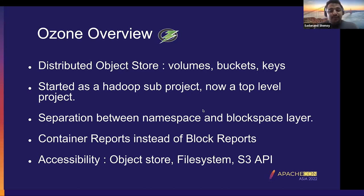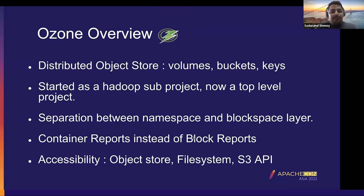Instead of block reports, Ozone uses container reports. In HDFS, the data node sends block reports to the name node to report it is alive. In Ozone, we have container reports. A container is a larger block — a block in HDFS is 128 MB by default, but a container in Ozone is 5 GB — so the number of reports the data node sends is greatly reduced. Ozone can be accessed via the object store, the file system, or the S3 API.